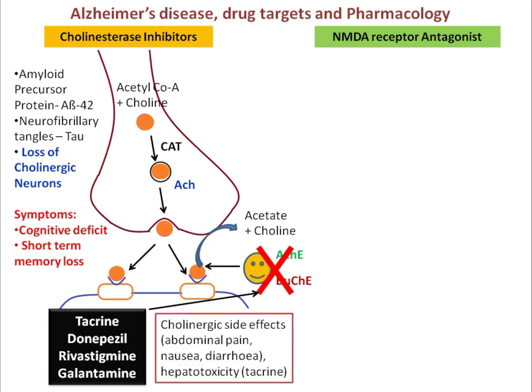The major unwanted effects associated with this class of drugs are cholinergic side effects including abdominal pain, nausea, and diarrhea. Hepatotoxicity is observed specifically with tacrine. The second major class of drug is NMDA receptor antagonists.